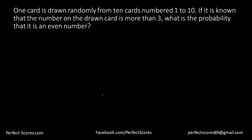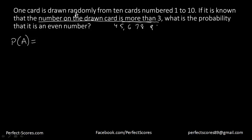Let's do one more question. One card is drawn randomly from 10 cards numbered 1 to 10. The first thing to do is identify the events. It is known that the number on the drawn card is more than 3 — let's call this event A. The probability of event A is that the number can be 4, 5, 6, 7, 8, 9, or 10 — that's 7 out of 10, so P(A) = 7/10.